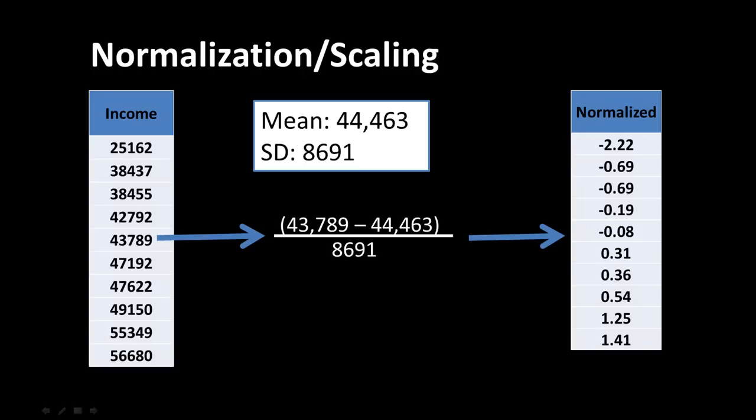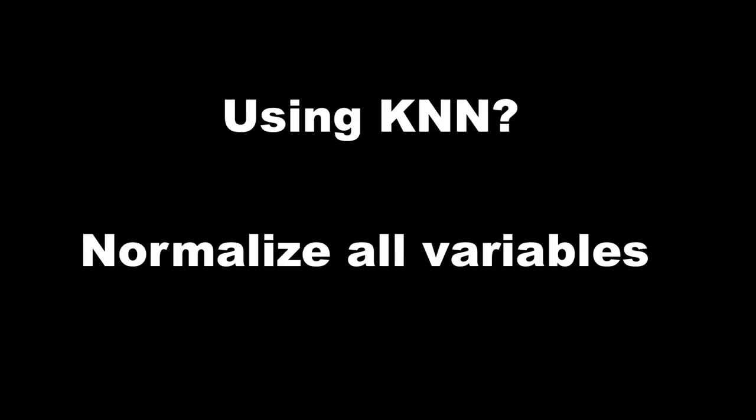These calculations may seem tedious, but the good news is you can do this directly in our software as we'll see in the hands-on lab. To summarize: if you're using the K nearest neighbors technique for either classification or prediction, you must first normalize all the variables. Otherwise, your results may not be as good as you intend them to be.